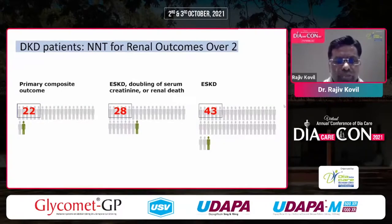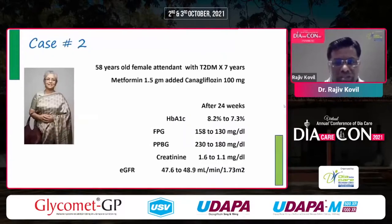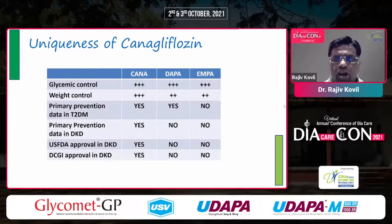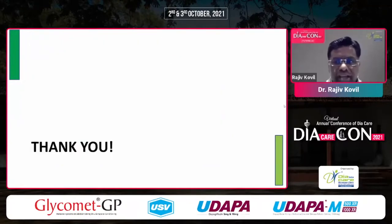Looking at the number needed to treat for renal outcome over 2.5 years: primary composite outcome NNT is 22, renal outcome NNT is 28, and for the hardest renal endpoint of end-stage kidney disease it is 43 — all impressive. So this 58-year-old lady would go on canagliflozin because it prevents progression of diabetic kidney disease, helps with weight control, reduces cardiovascular disease risk, prevents three-point MACE, and also prevents hospitalization due to heart failure, which is a very common adverse event in patients with chronic kidney disease. Thank you all for your patient hearing.